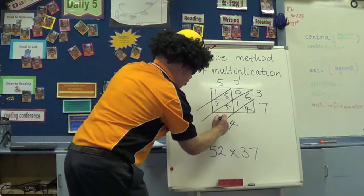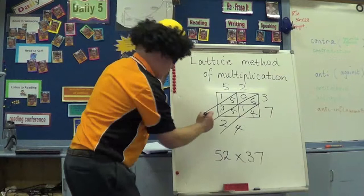1 and 3 is? 8. 4 and 5? 9. Come on, stick with me. And we've just got the 1.